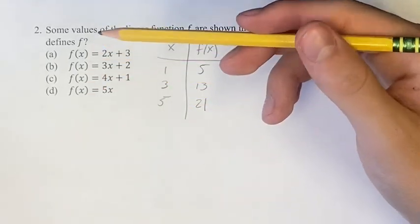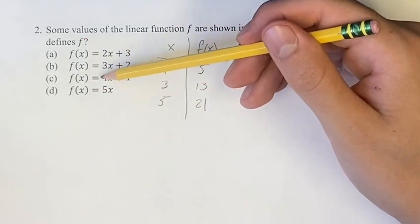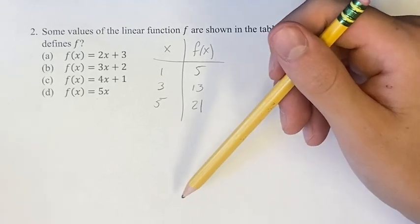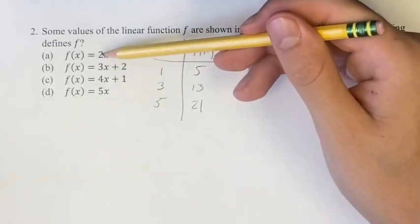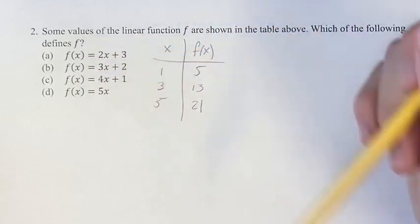So what we have to notice here is that the slopes of all these lines are different. So all we have to do is find the slope of f, and it will be either 2, 3, 4, or 5, and then we'll know which of these is our answer.